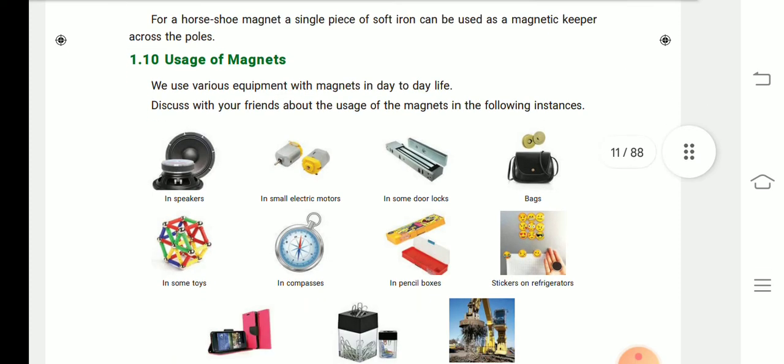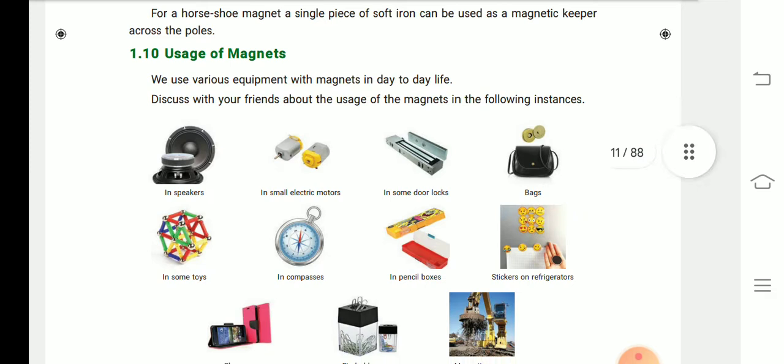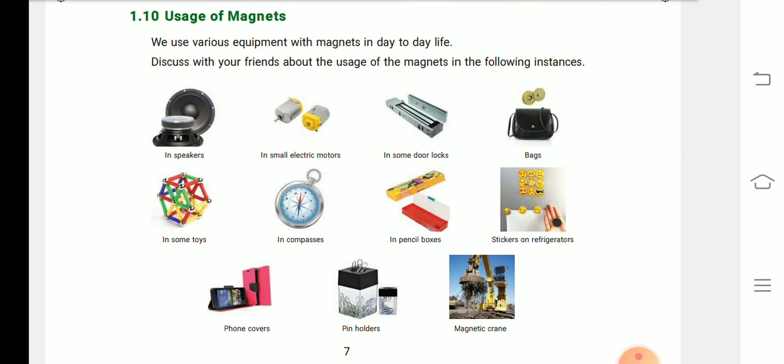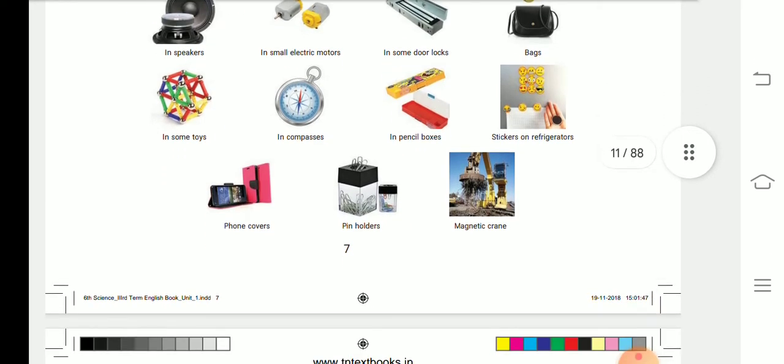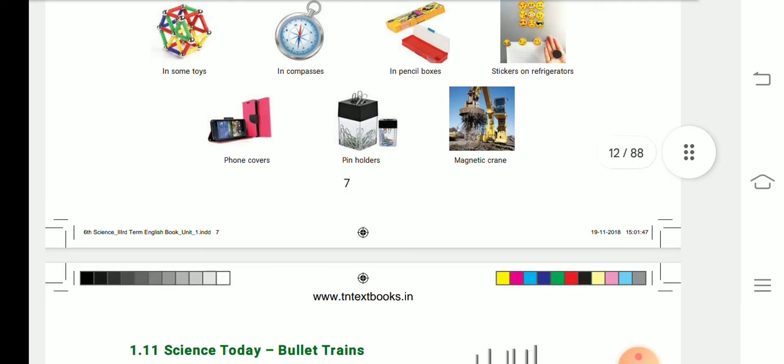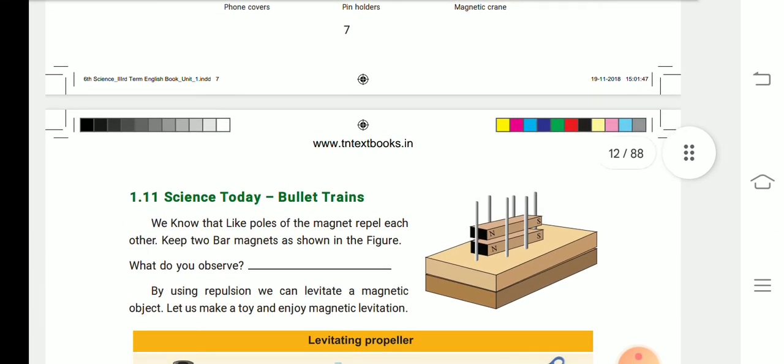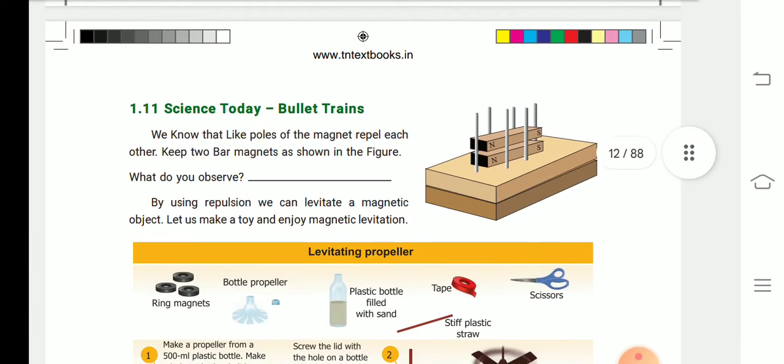Usage of magnets. The magnets are used in many ways. For example: speakers, in electric motors, in some door locks, bags, some toys, compass, pencil box, stickers on refrigerator, phone covers, pin holder, magnetic crane. These are the ways magnets are used.